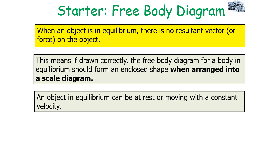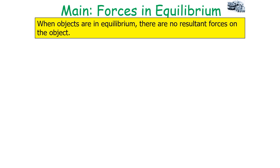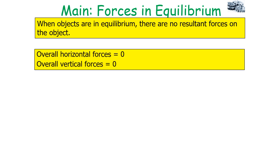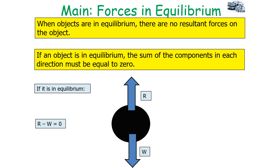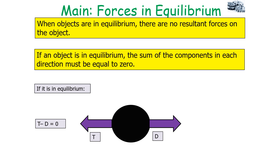An object in equilibrium can either be at rest or moving with a constant velocity. When objects are in equilibrium, there are no resultant forces, meaning the overall horizontal forces equal zero and the overall vertical forces equal zero. For example, if the object is in equilibrium, R minus W equals zero, so R equals W. Similarly, T minus D equals zero, so T equals D.